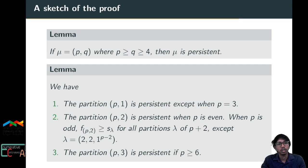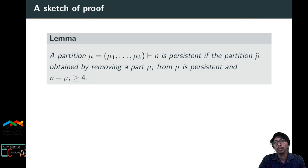The third lemma states that the partition (p, 3) is persistent if p ≥ 6. Another main lemma useful in proving the theorem is that μ of n is persistent if the partition μ̃ obtained by removing a part μ_i from μ is persistent and n − μ_i ≥ 4.